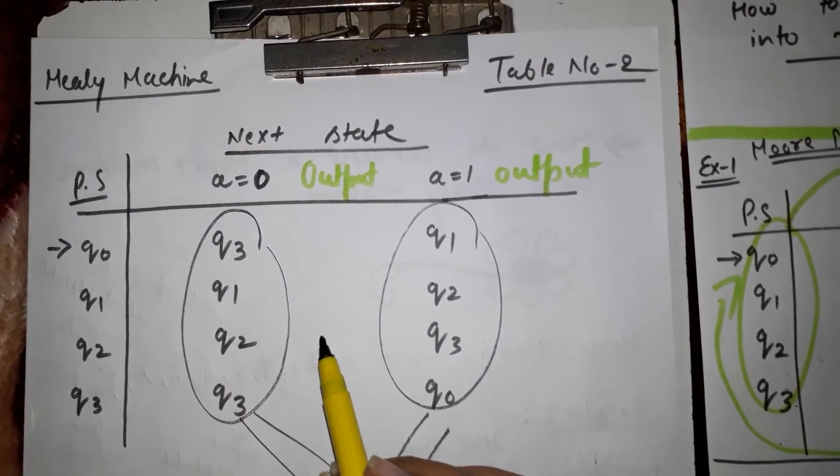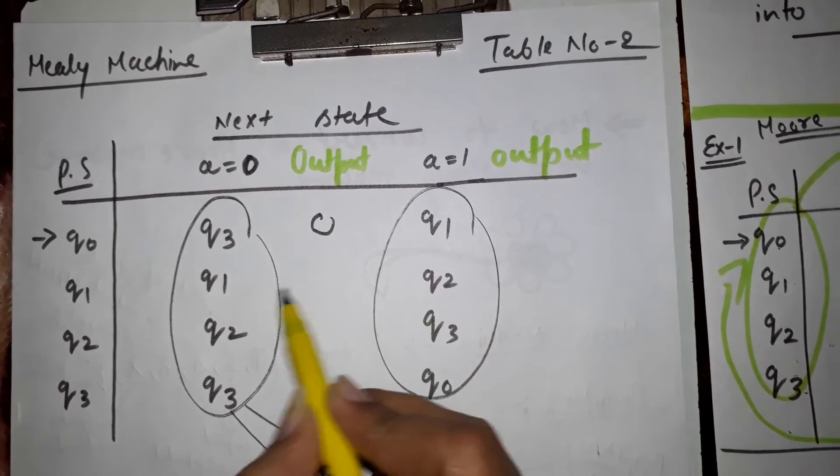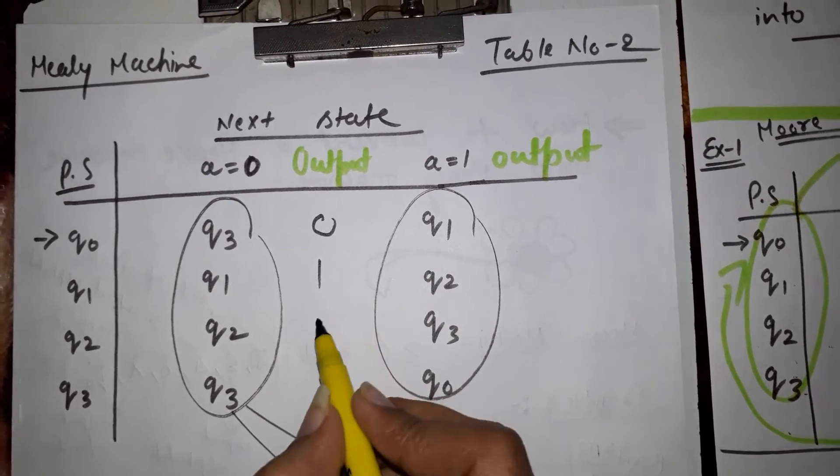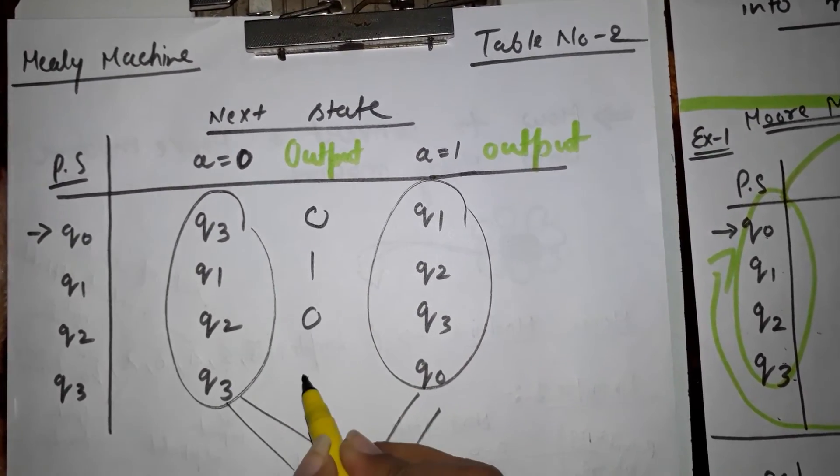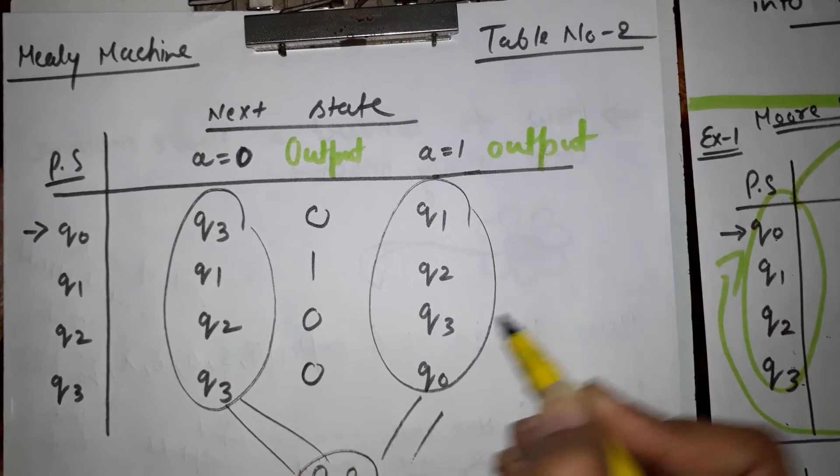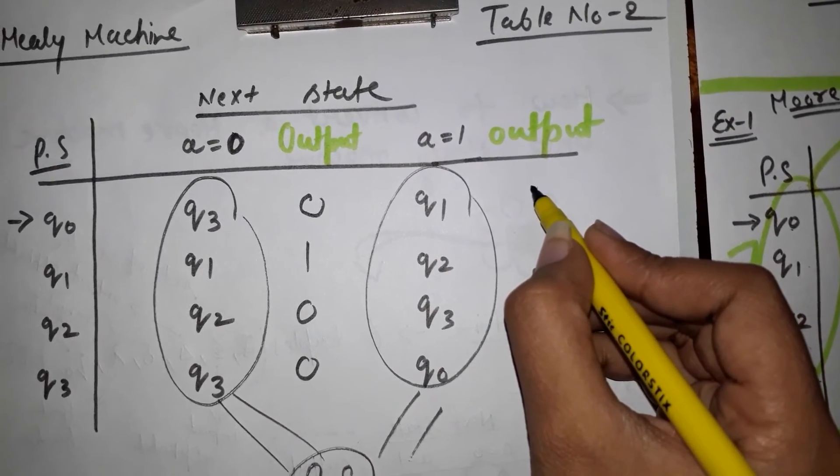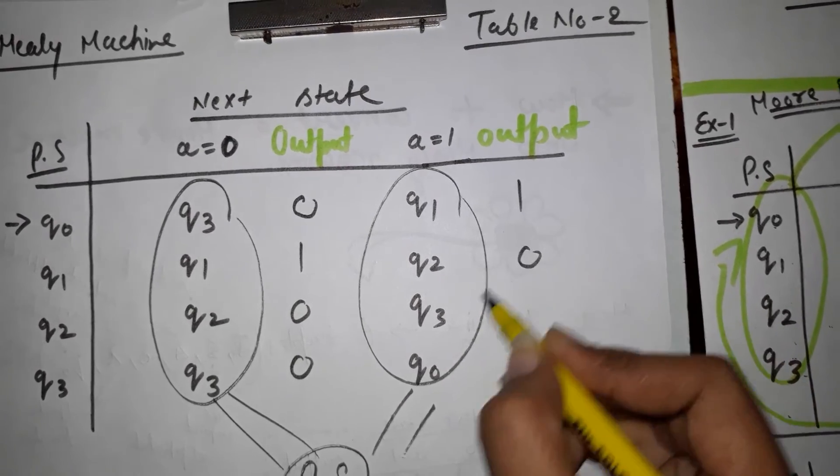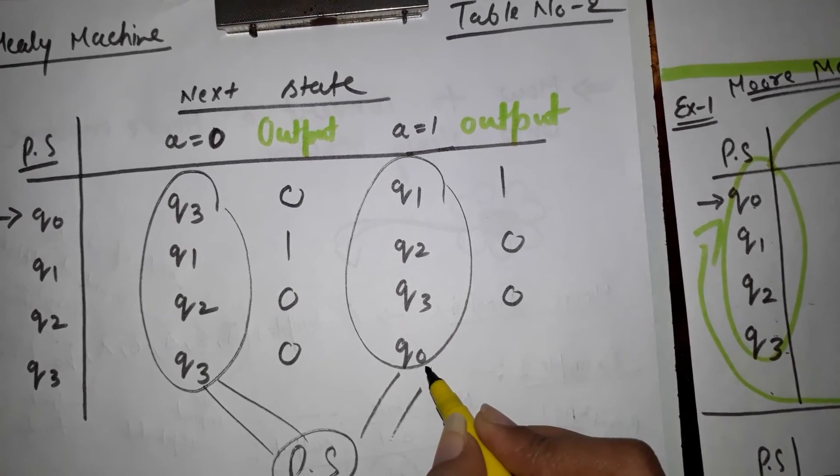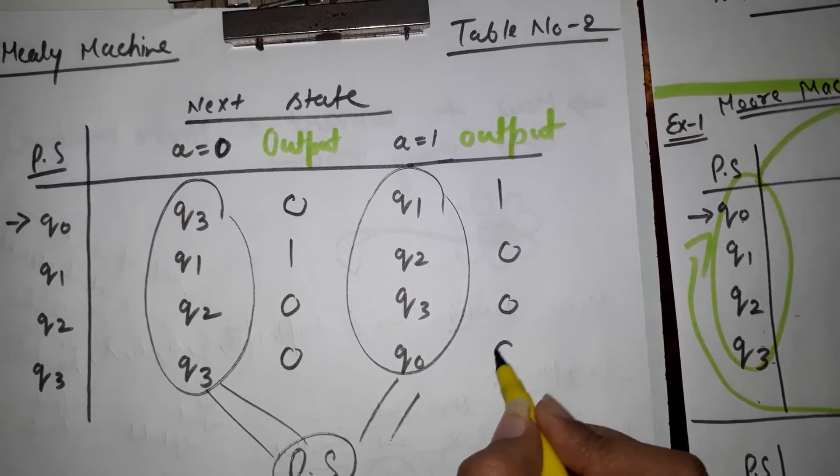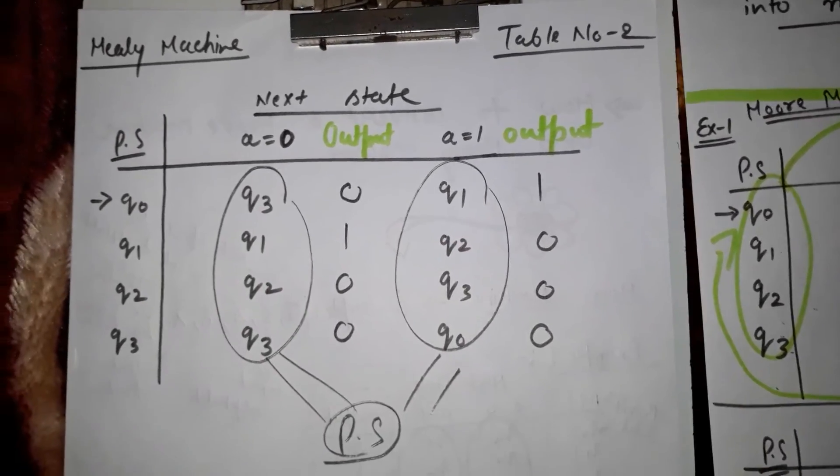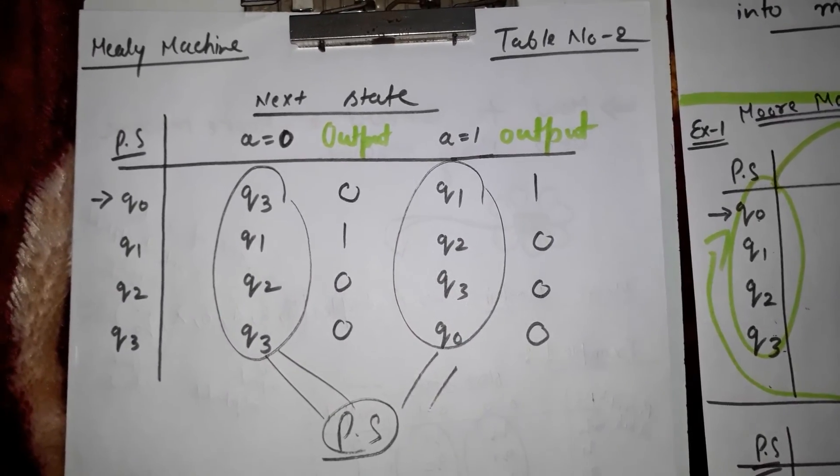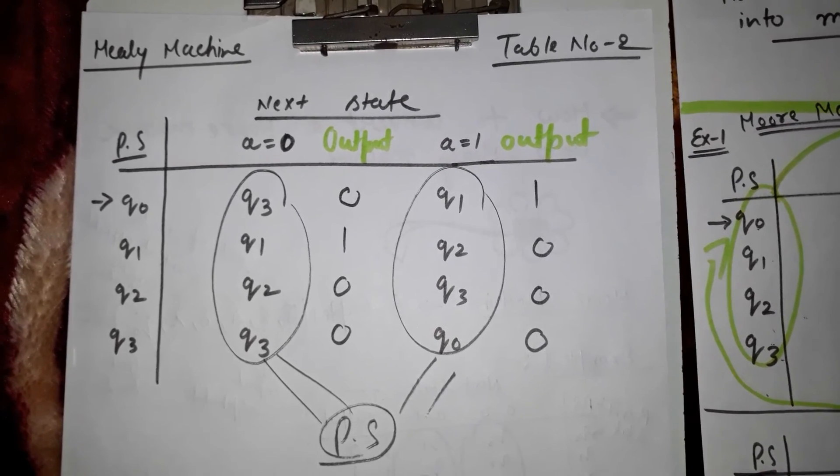The output for q3 is 0, the output for q1 is 1, the output for q2 is 0, the output for q3 is 0, and the output for q0 is 0. This is all about how to convert a Moore machine into a Mealy machine.